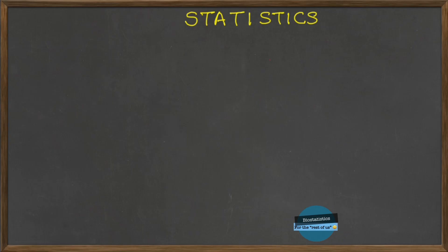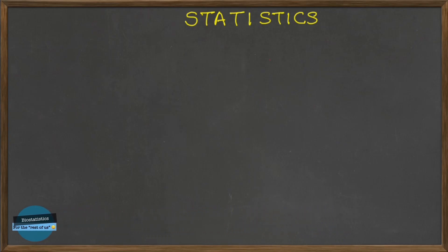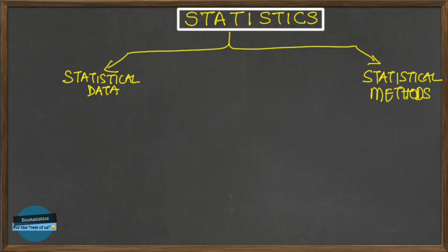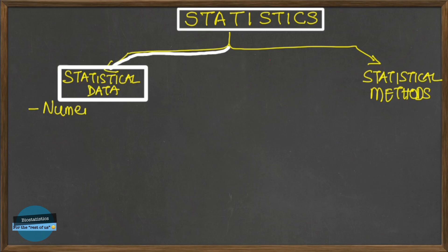Hi, when we hear the word statistics, it is generally referring to one of two things: either it refers to statistical data or statistical methods. When it refers to statistical data, it means the numerical description of things, and this is usually obtained by observation, counting, or taking measurements.